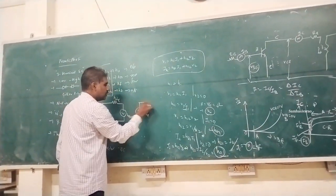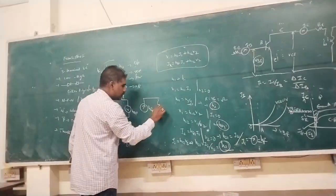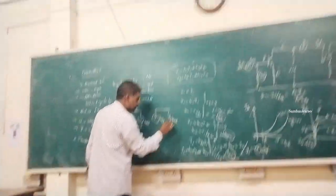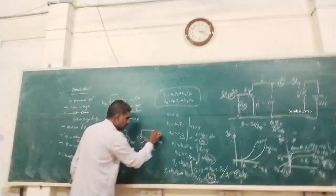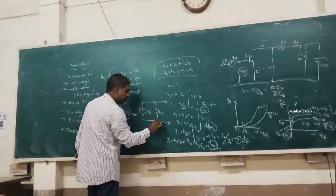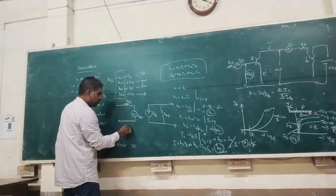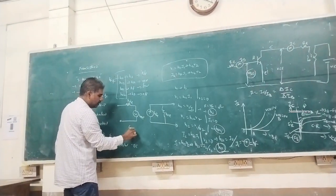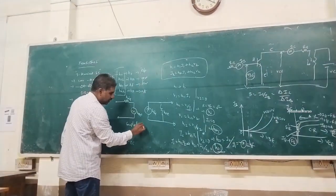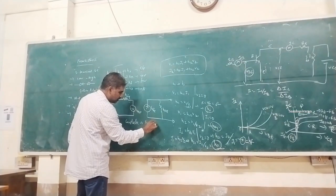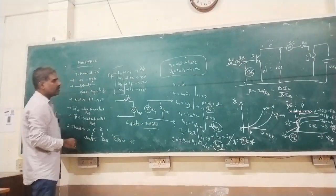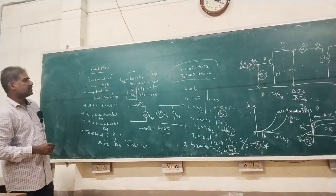HRE is the reverse voltage at the input, HFE is the forward current gain at the output, and HOE is the output admittance. This is the complete hybrid equivalent model for a transistor.